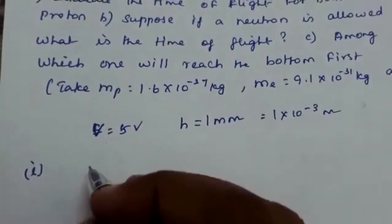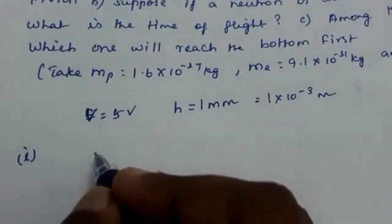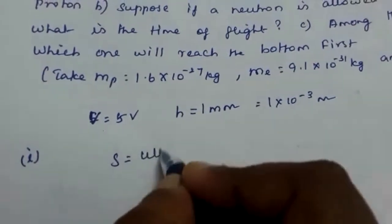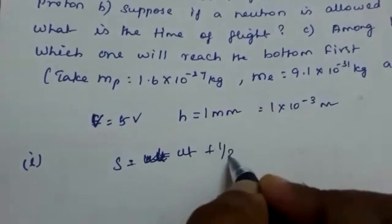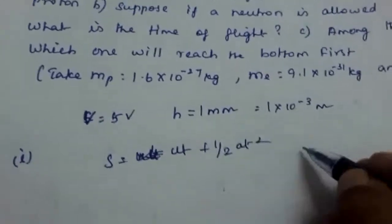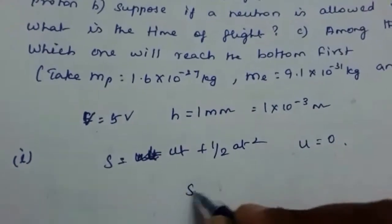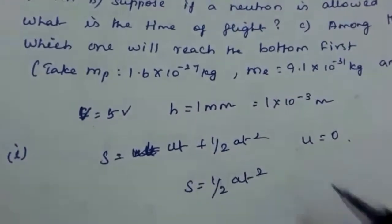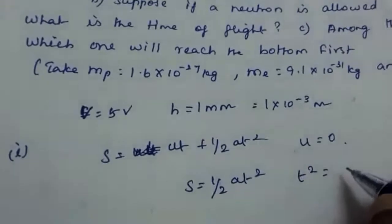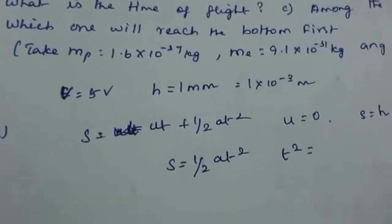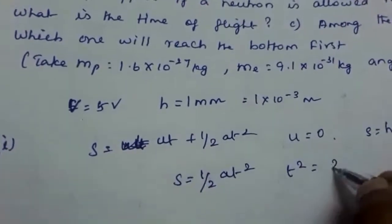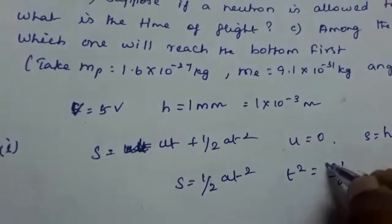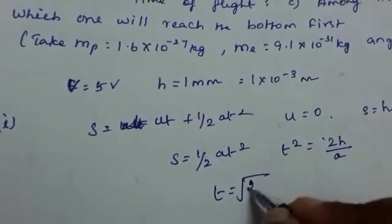To find the time of flight, we use the equation s = ut + ½at². Since initial velocity is zero, this simplifies to s = ½at². Solving for t: t² = 2h/a, so t = √(2h/a).